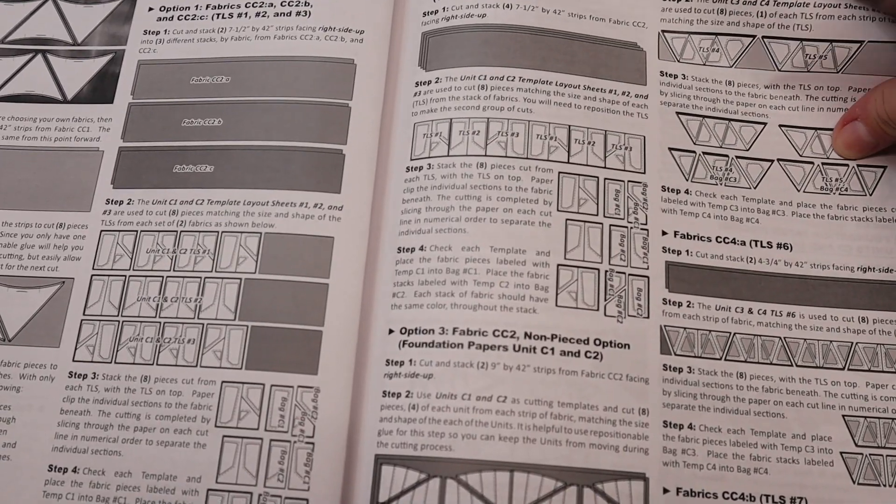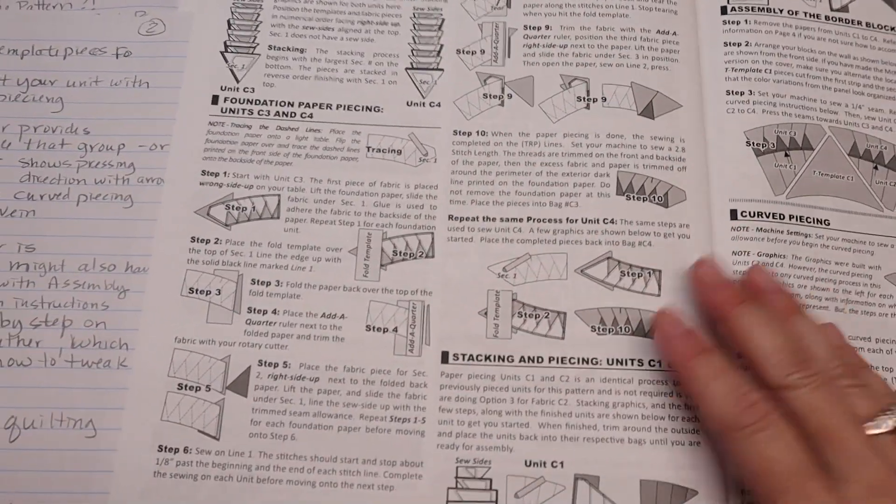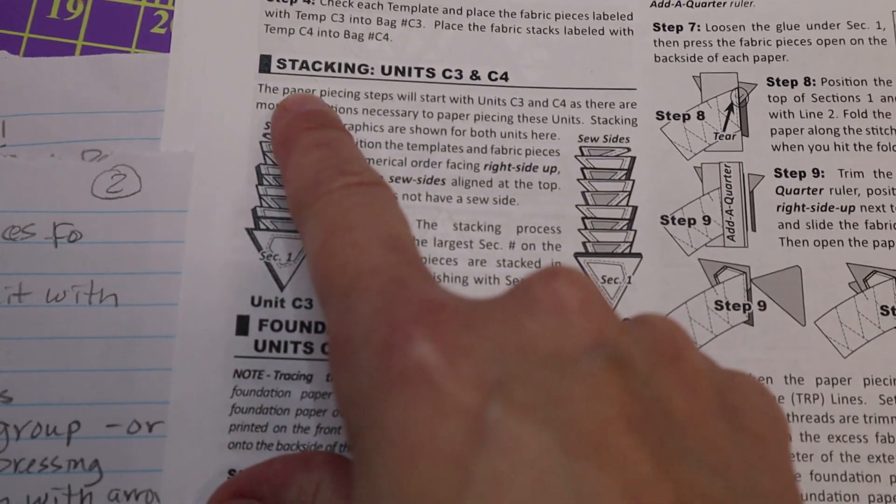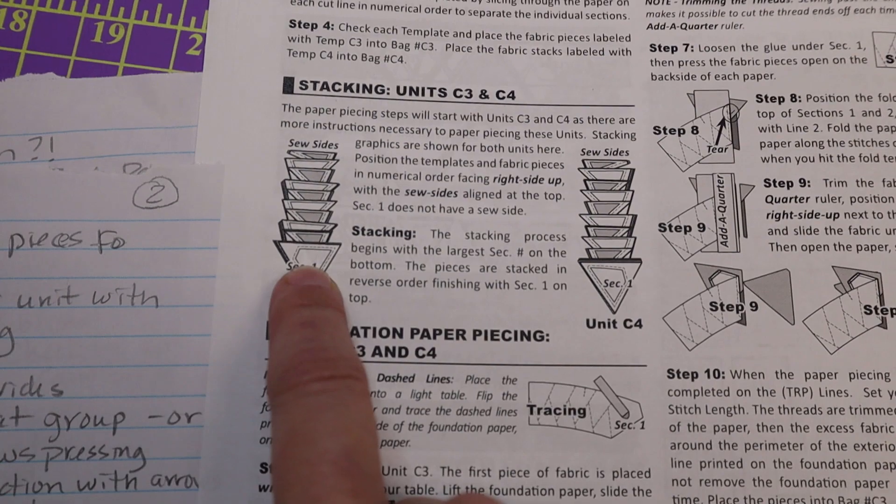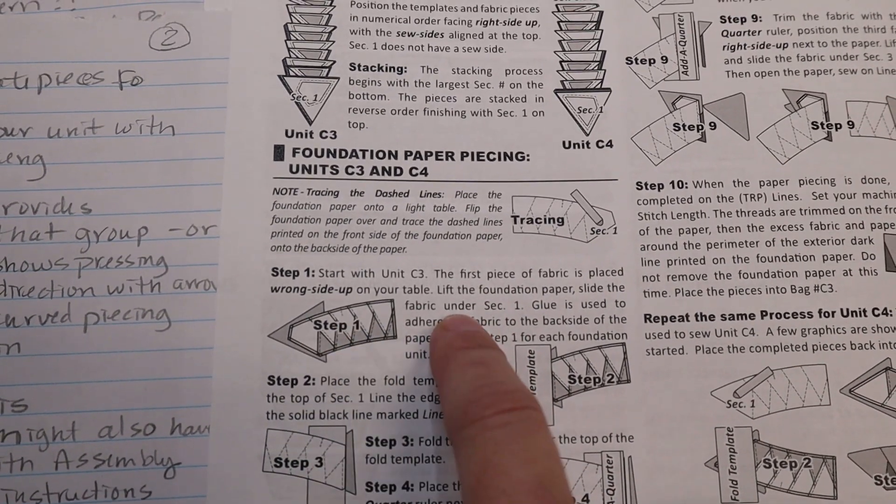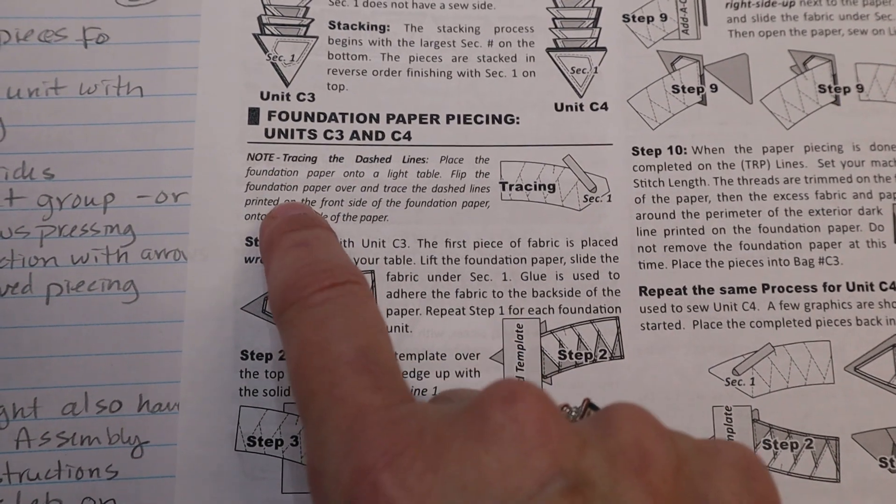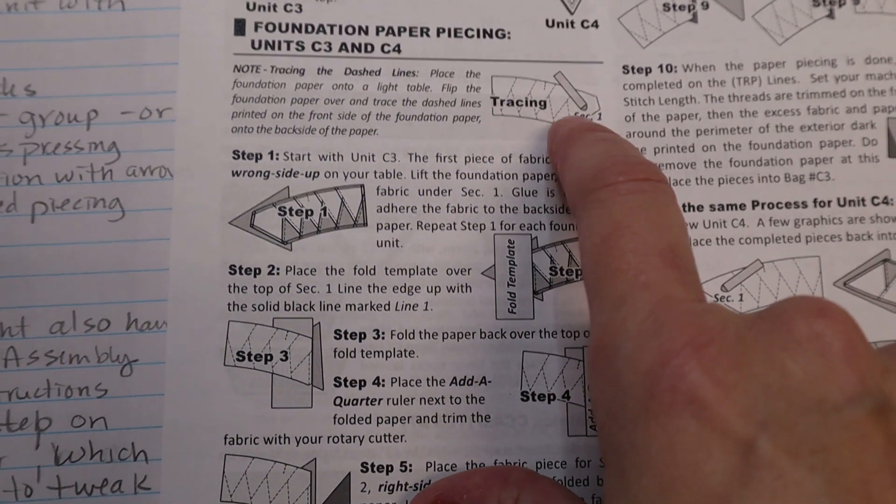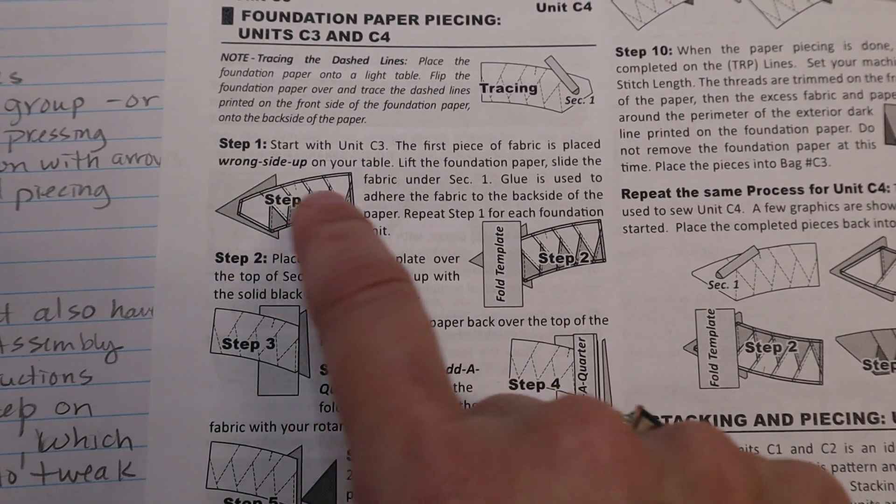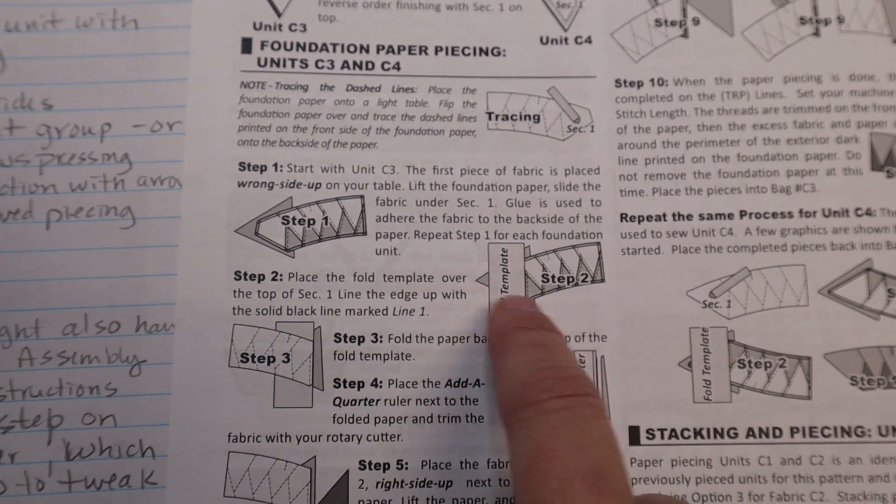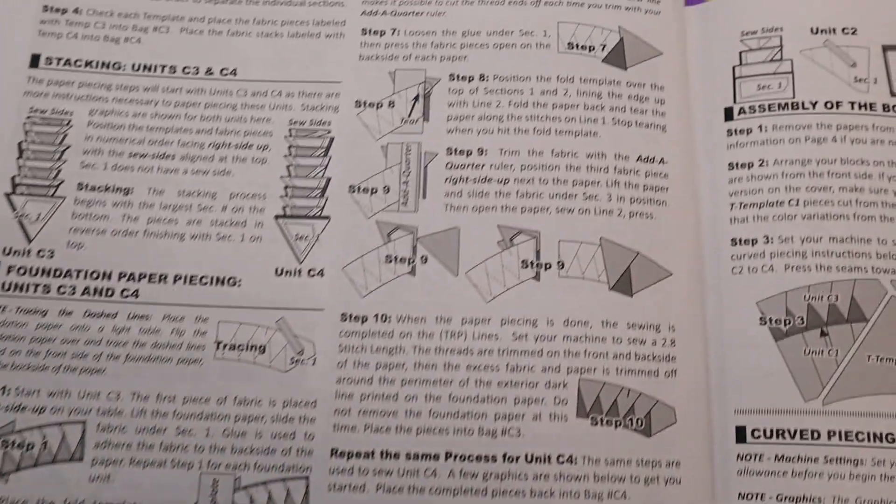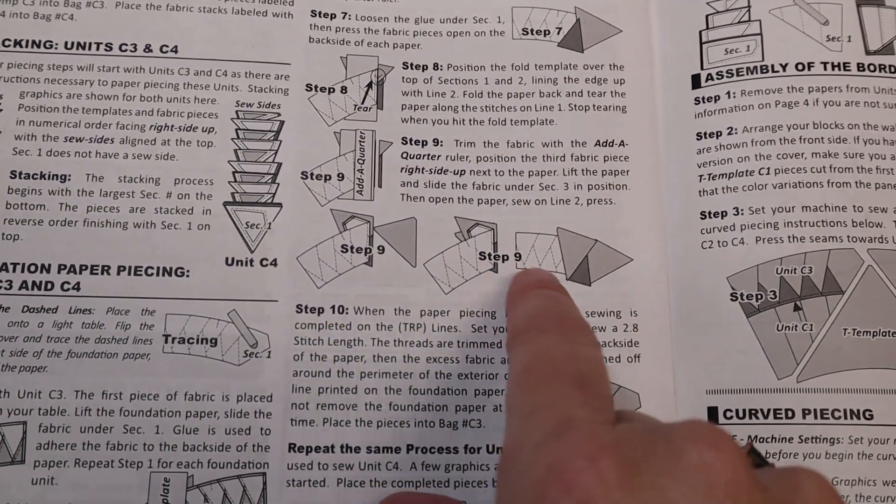Once you get to the end of all of your cutting instructions in each chapter, then you're basically ready to start sewing that unit. So there's always going to be a stacking diagram that shows you how to stack your fabrics to get ready for chain piecing. And then there's always going to be some instructions on how to start your first piece. It will tell you here, it gives you some tips on tracing the dashed line so you can see. Then it will tell you the first piece of the fabric is placed wrong side up. And there's some really good diagrams. This is what your paper should look like. It'll show you how to start that first section and then how to use your add a quarter ruler to trim. It shows you all those steps right through here and how to put on your next piece.